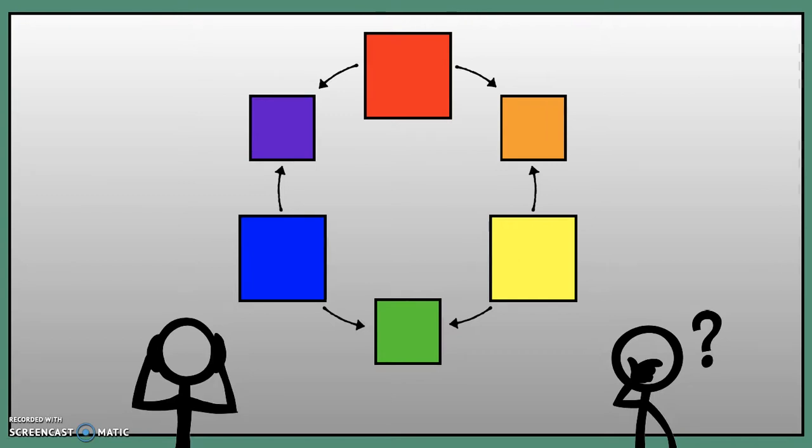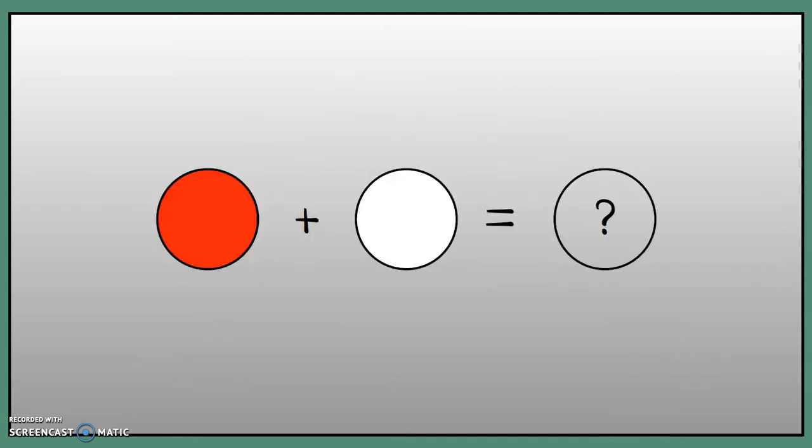So before we go off to do our independent activity and start looking at some different tints, shades, and tones, let's see if we can identify what's going to happen if I mix some different colours together. So if I added these two colours together, if I mixed these two colours, what do you think would happen? How would you describe the resulting colour? Would it be a tone, a tint, or a shade?